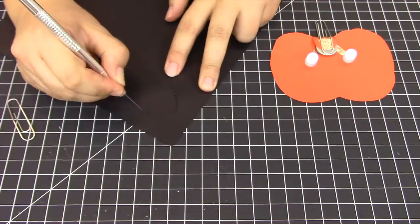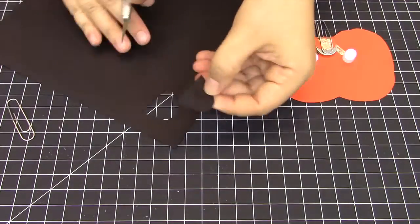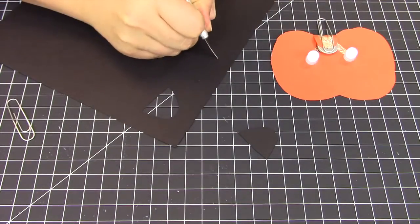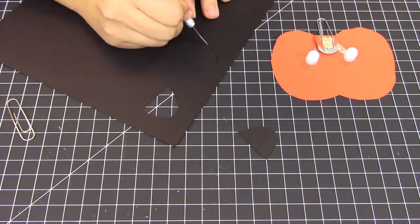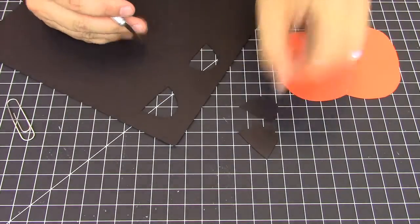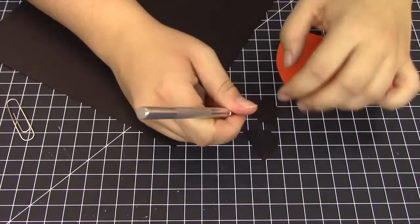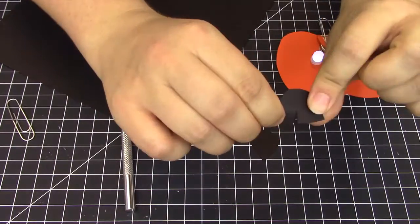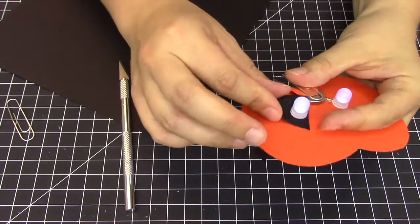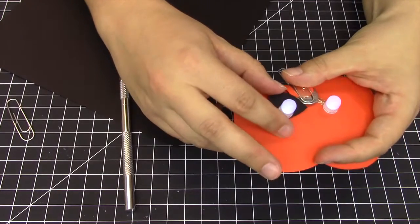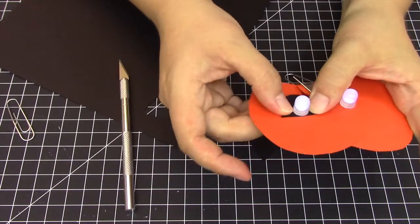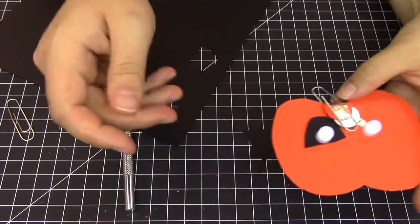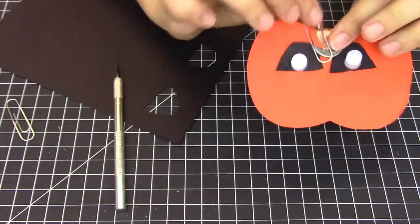Next we'll cut out some decorations from black construction paper. You can cut out these shapes to make the eyes. Cut a slit in the center of your eyes. This slit will go on either side of the LED legs. Slide it underneath and rotate it into place. Repeat this for the other eye.